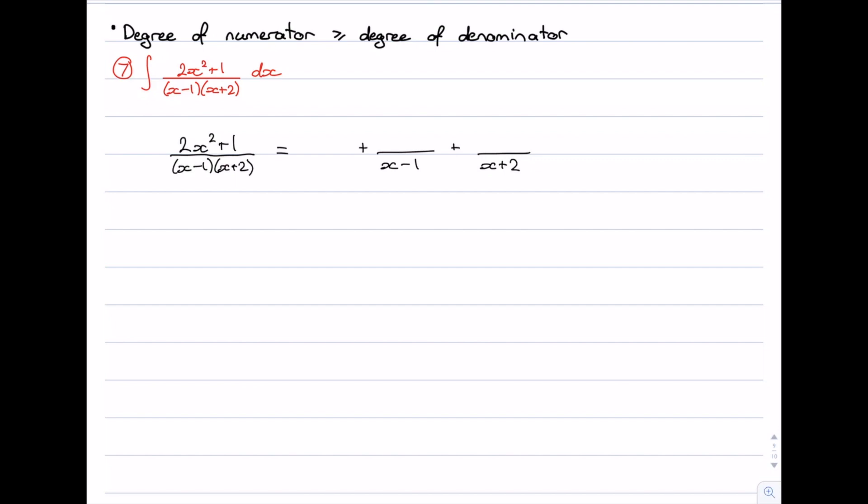Now what is the degree of this polynomial? The degree of the polynomial which is going to sit out the front is going to be the degree of the numerator minus the degree of the denominator in our original fraction. So in our original integrand, the numerator has a degree 2, and so does the denominator. So 2 minus 2 gives us 0.